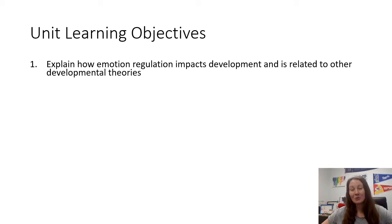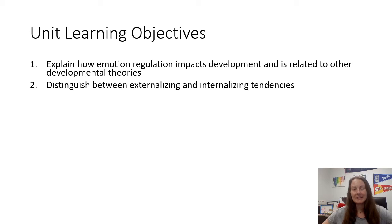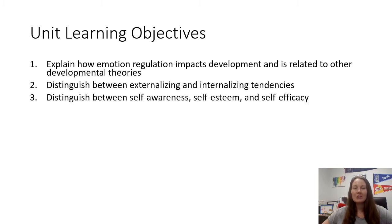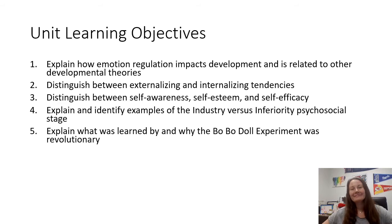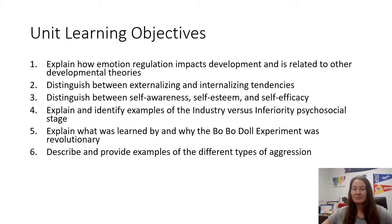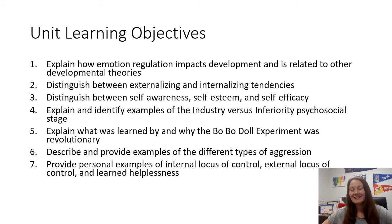I want you to be able to explain how emotion regulation impacts development and is related to other developmental theories. I want you to distinguish between externalizing and internalizing tendencies, and distinguish between self-awareness, self-esteem, and self-efficacy. I want you to explain and identify examples of industry versus inferiority, and explain what was learned from the Bobo doll experiment and why it was revolutionary.